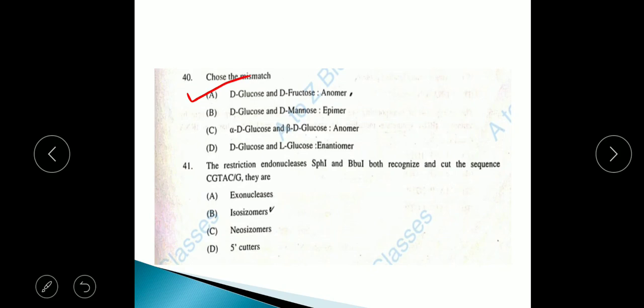Question 41: The restriction endonucleases SPH1 and BBU1 both recognize and cut the sequence CGTAC slash G. They are isoschizomers. For isoschizomers, they recognize the same sequence.